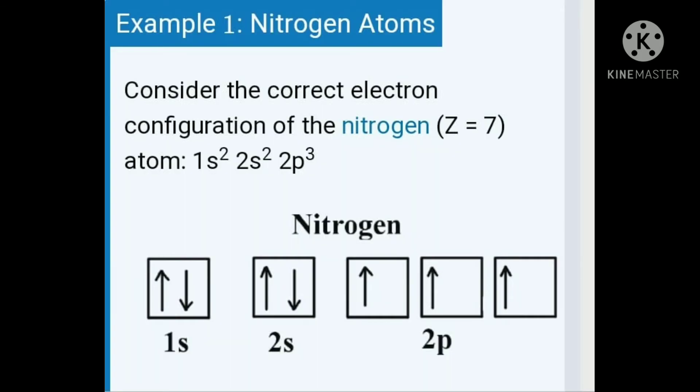We can explain this rule with some examples. First, in the case of nitrogen, in accordance with Hund's rule, the electronic configuration of nitrogen — atomic number 7 — is 1s² 2s² 2p³. In the 2p orbital: 2px¹ 2py¹ 2pz¹. The fifth, sixth, and seventh electrons singly occupy the 2px, 2py, and 2pz orbitals, so that the number of unpaired electrons with parallel spin in the 2p level is maximum.